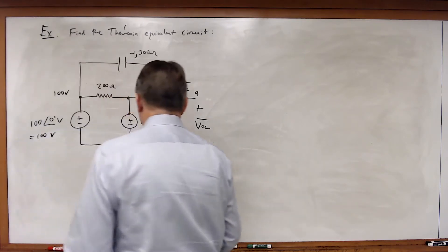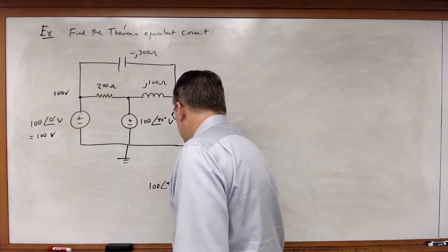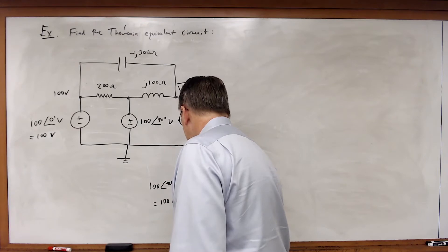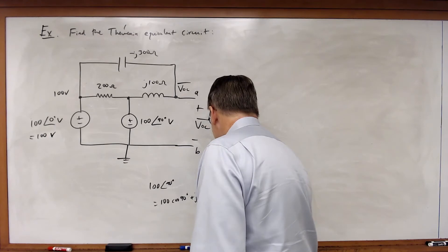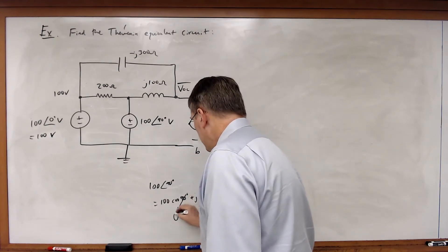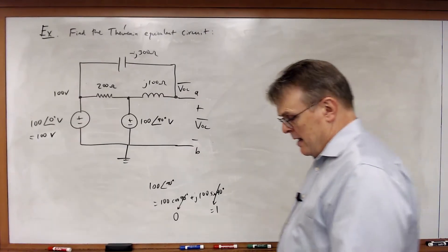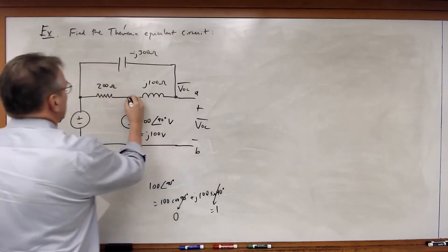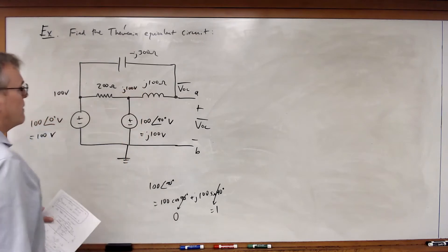j100 sin(90°). Since cos(90°) is zero and sin(90°) is one, this equals j100 volts. So I've got j100 here, that's a defined node.